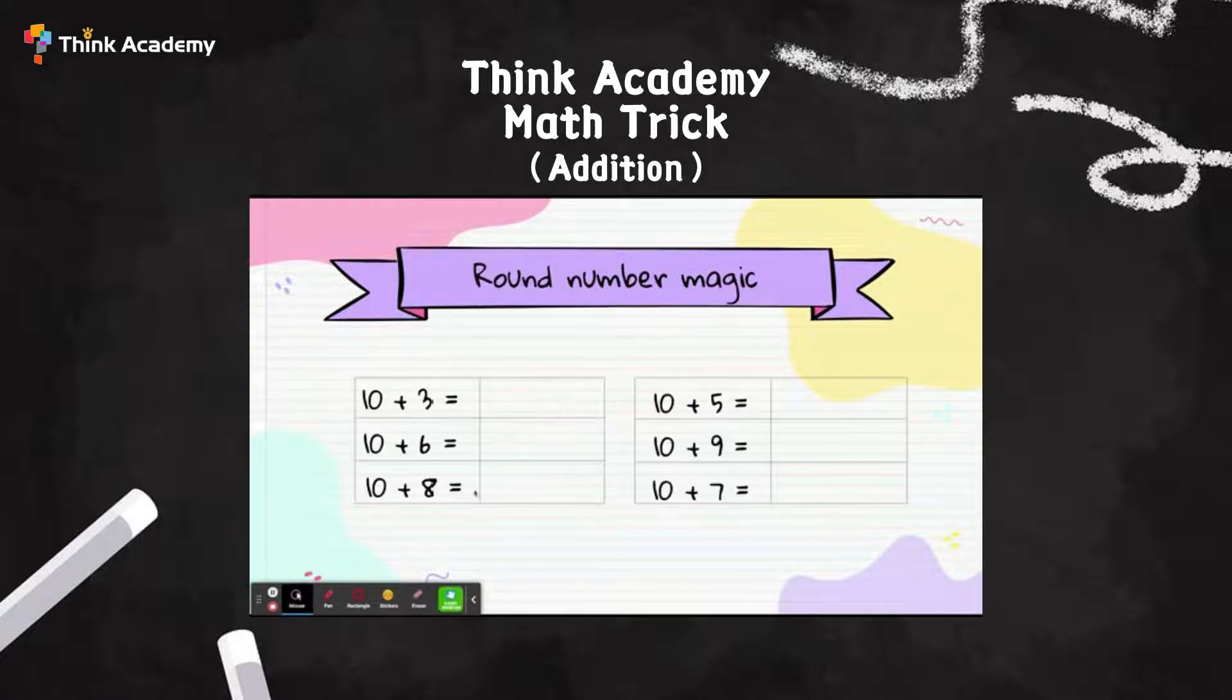Now I want to tell you why the round number 10 is so good to calculate. First, let's see 10+3, what does that equal to? Yes, it equals 13. We just need to change the one digit to get to 13. How about 10+6?